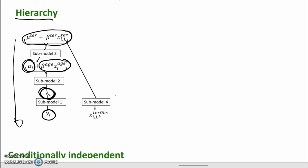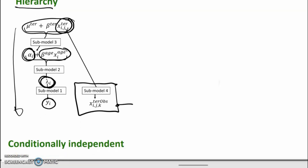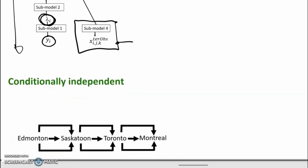There's also a hierarchical component in that the observed values of territory size arise as a random draw from a distribution that has the true territory size as its mean.